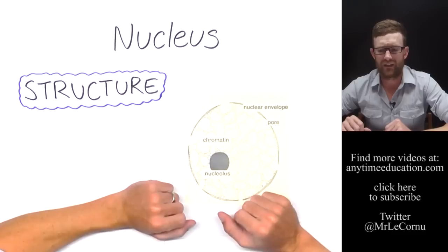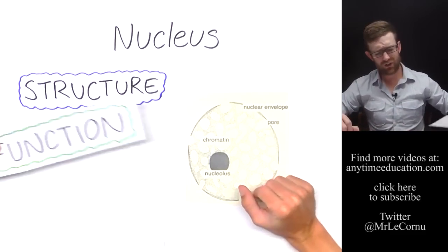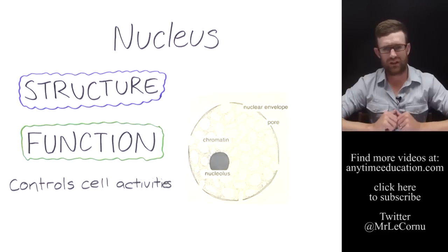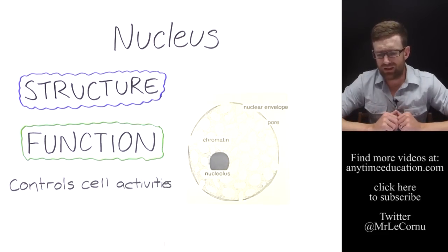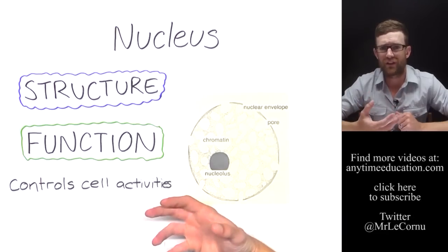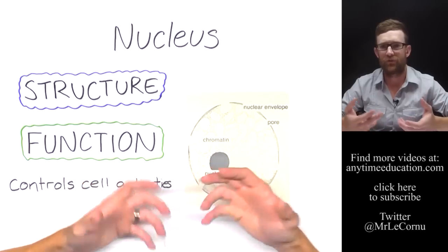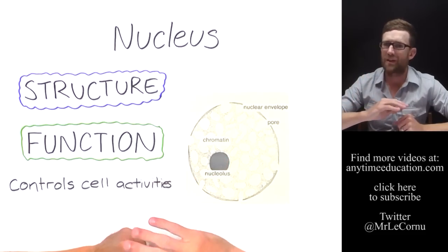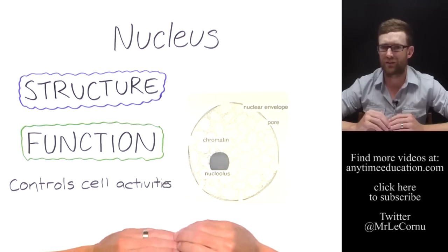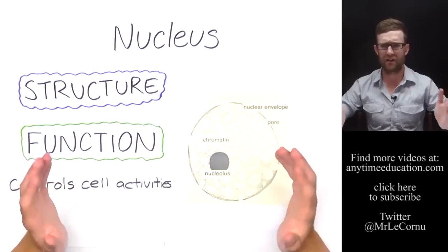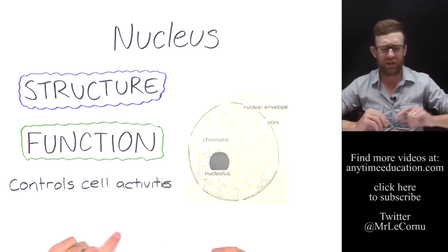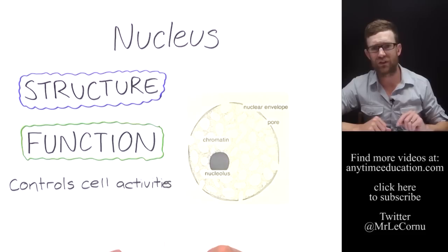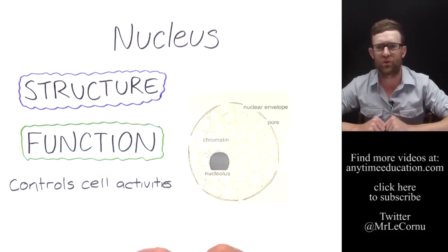The nucleus also contains a section called the nucleolus, where ribosomal RNA is produced. The function of the nucleus is that it is the control center for the cell — it controls all cell activities. I often get students to think of it as the brain of the cell as an analogy, but don't describe it that way to someone else. The best answer for the nucleus's function is that it controls cell activities.